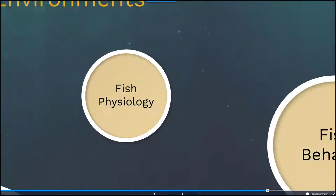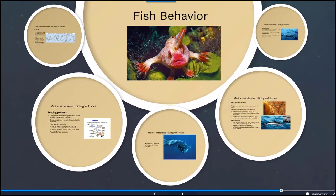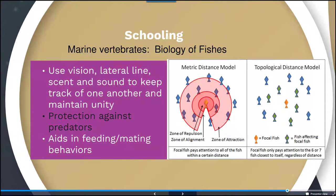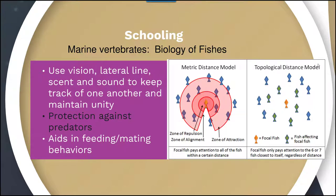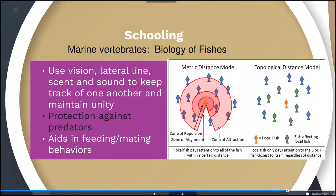Most fish use vision, the lateral line, and chemoreceptors to keep track of one another and maintain unity through a process called schooling. This helps protect against predators and aids in feeding and mating behaviors. There are a couple of different forms: a metrical distance model, where fish maintain equidistance from a focal fish within defined zones, and a topological distance model, where fish affecting a focal fish are distributed more randomly.